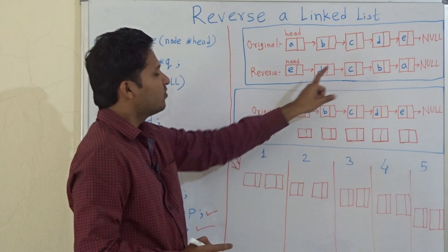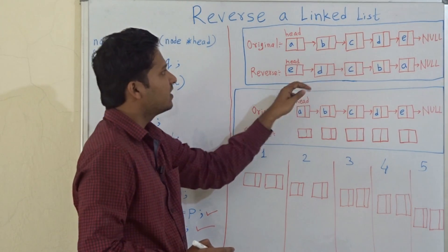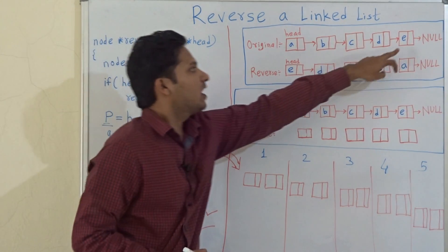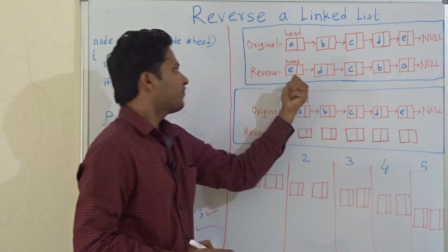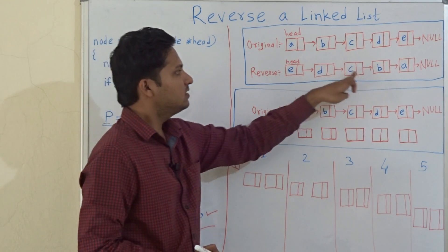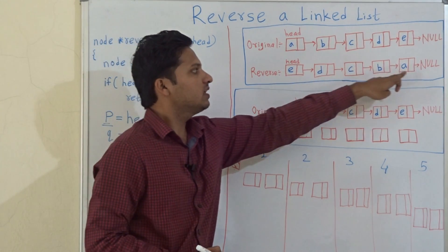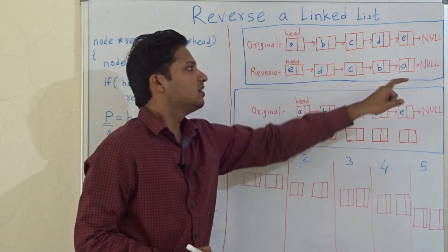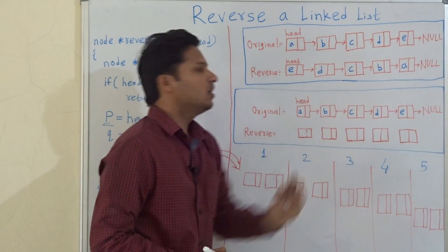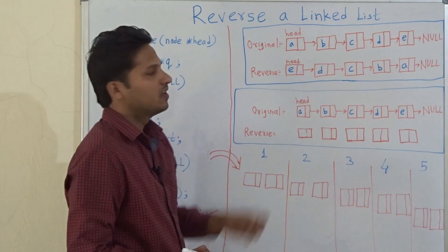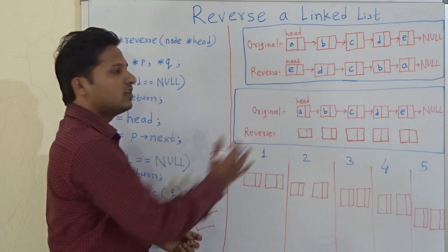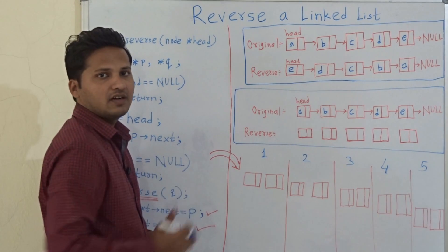So the reverse of this linked list is: the last node comes first, that is E, then D, C, B, A — and the first node points to null. So this is how we reverse the linked list.